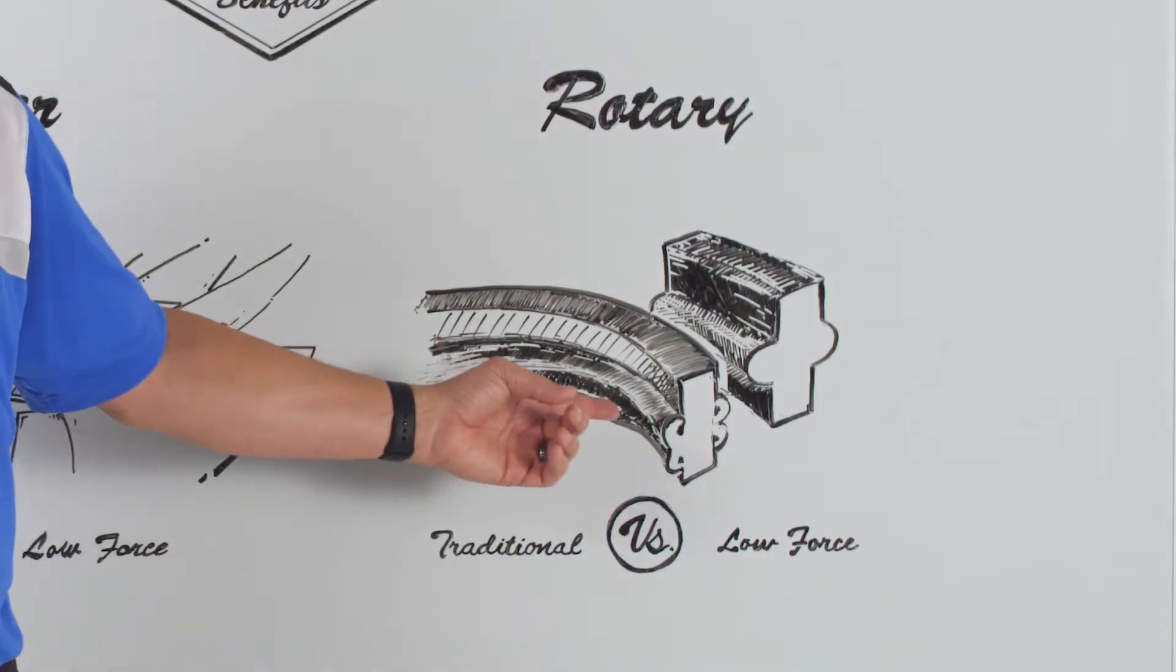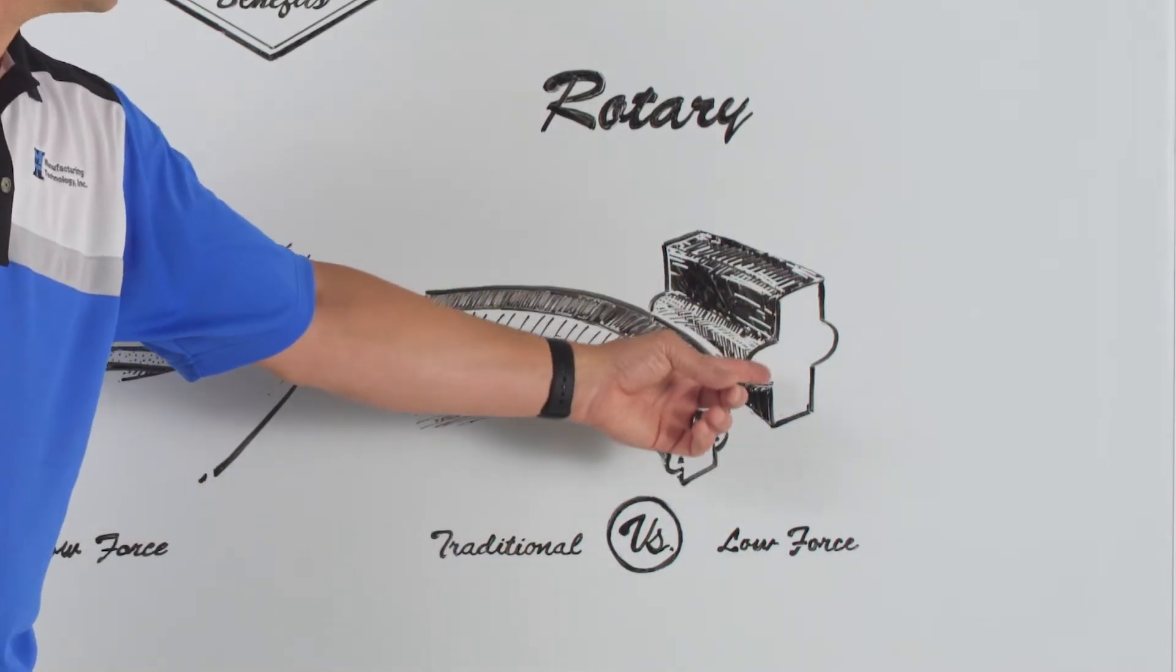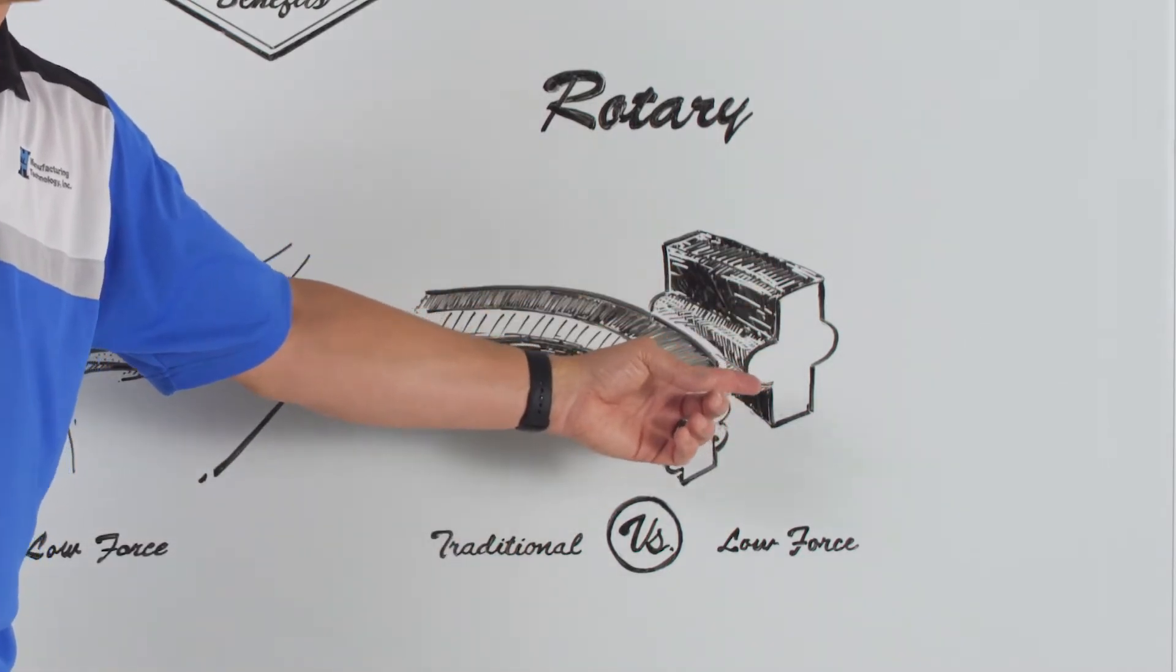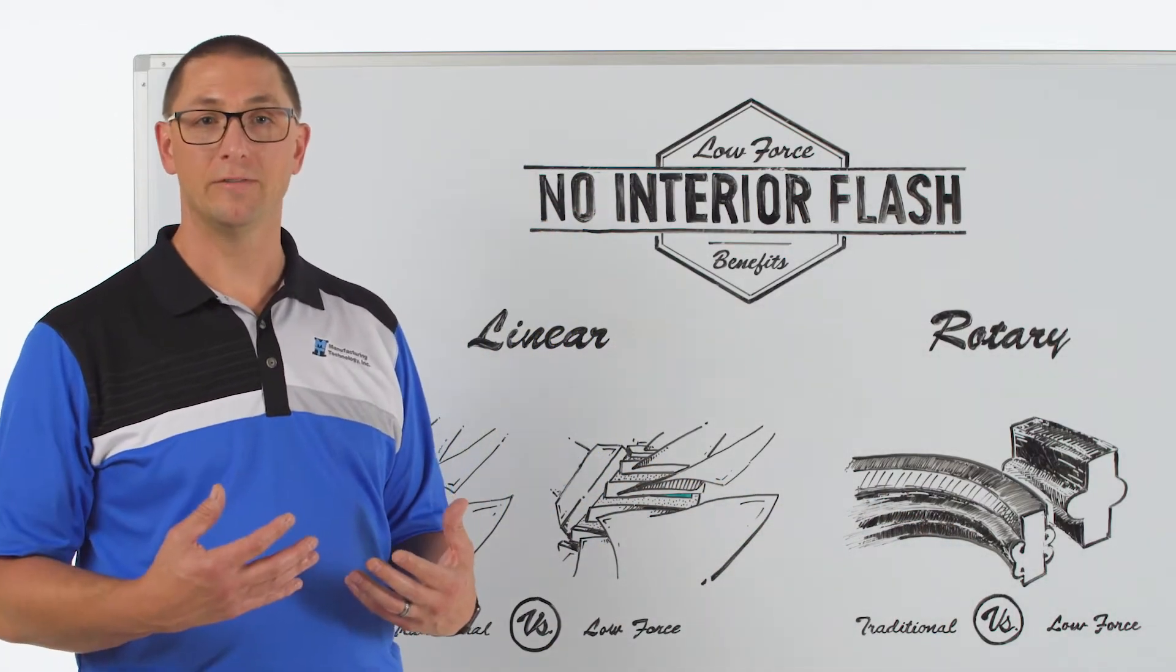You can see the ID flash associated with a traditional friction weld and then one if we generate the amount of upset you can see it in low force. But this is a very difficult flash to remove on the ID of a tube.